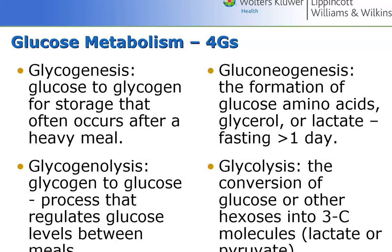If you take in way too much glucose and your cells have taken in as much as they want or need and you still have to store some, then we make glycogen. That is called glycogenesis — the production of glycogen, or making glycogen.